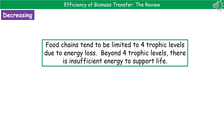As a result of all these different energy losses through a food chain, food chains themselves can't be infinite. They tend to be limited to four trophic levels due to that loss of energy. If you try to go beyond four trophic levels, there's just not enough energy left within the food chain to support life.